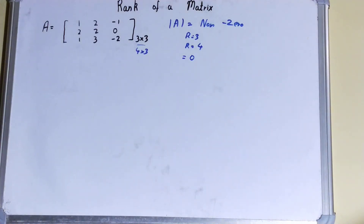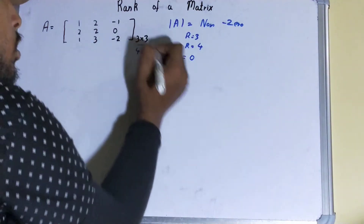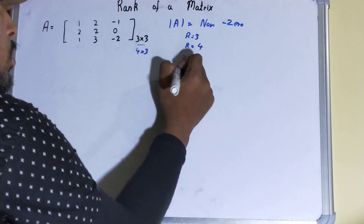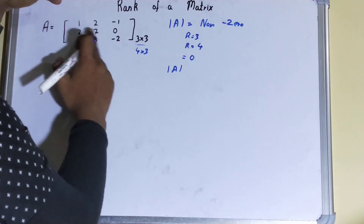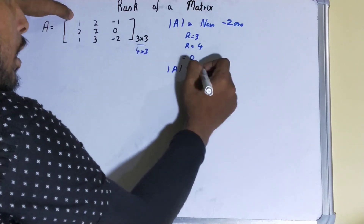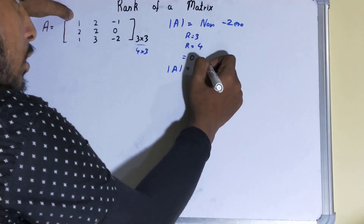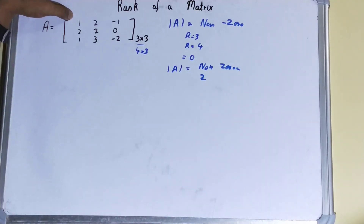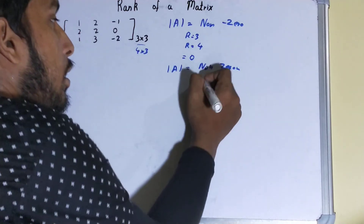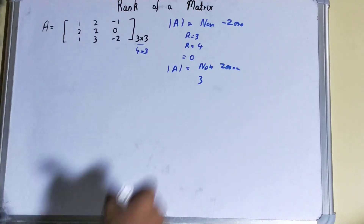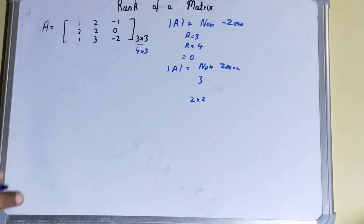But if the determinant is zero, then the rank is not equal to that dimension. For example, if you checked a 3×3 and got zero, you then take any 2×2 submatrix and find its determinant. If that determinant is non-zero, your rank is 2. For a 4×3 matrix with a non-zero 3×3 determinant, rank is 3; otherwise you check a 2×2 submatrix within it.